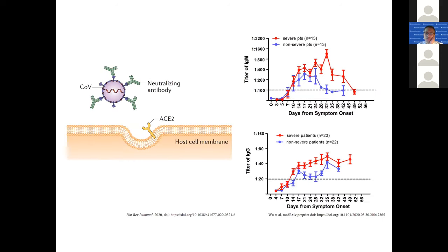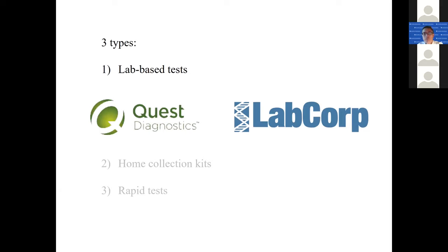Data shows that basically everybody develops antibodies toward SARS-CoV-2, which is the case for almost all viruses — unless you're immunocompromised, you're going to develop a detectable antibody response. That will tell you whether or not you have been infected in the past. With antibody tests there are three different types: lab-based tests, which are blood tests being offered by places like Quest or LabCorp; these tests are pretty accurate and there's never really been a question about whether they are sensitive or specific.